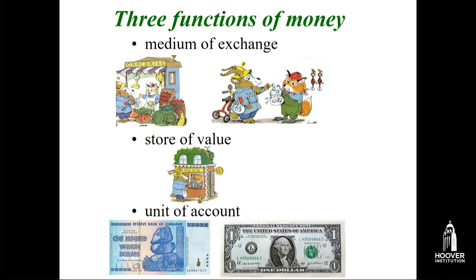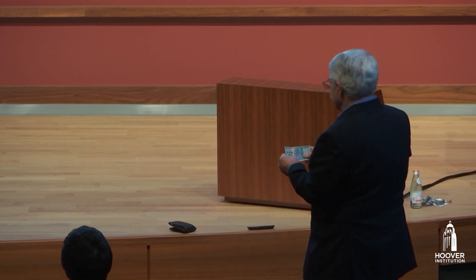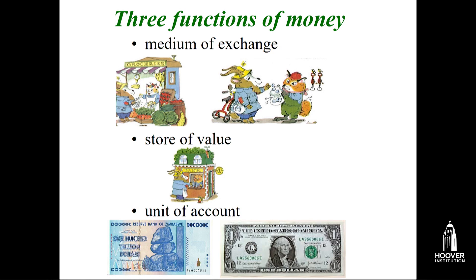The third function is unit of account. The US dollar is pretty steady and stable. Next to that I have a picture of a Zimbabwe note — no self-respecting economist walks around without a 100 trillion dollar note from Zimbabwe. Zimbabwe had terrible inflation, so it wasn't a very good unit of account. They started using dollars as a unit of account: when you sold a house or a car, you quoted in dollars even though payment might have been made in Zimbabwe dollars. You want to have all three of these functions; without them, money isn't very useful.